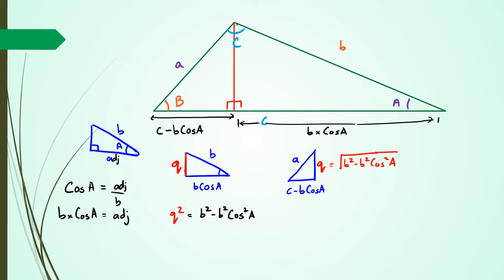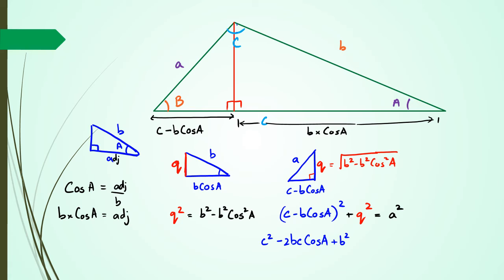Now using Pythagoras, I can say this side squared plus this side squared equals A squared. So the two sides squared equals A squared. I can rewrite this as: (C minus B cos A) squared plus Q squared equals A squared. When I expand that bracket I get C squared minus 2BC cos A plus B squared cos squared A, plus Q squared which is B squared minus B squared cos squared A, and all that equals A squared.